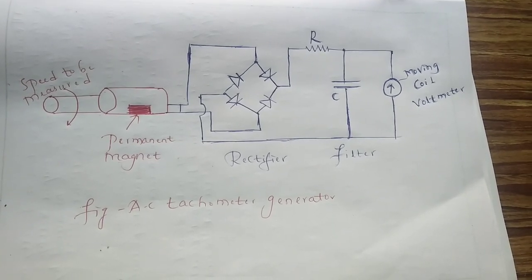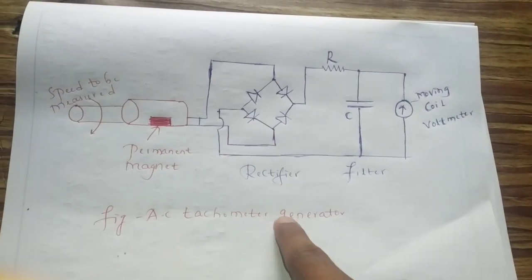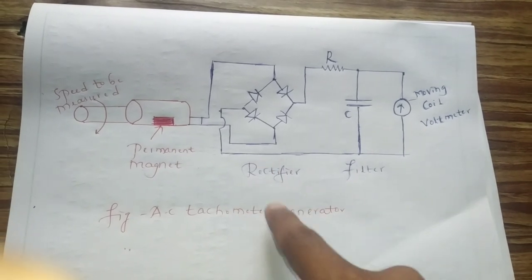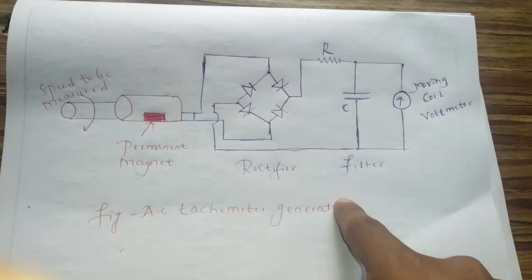In the last video, we discussed the DC tachometer generator. This is the diagrammatic representation of AC tachometer generator. By using this diagram, we will discuss the construction and working of AC tachometer generator.